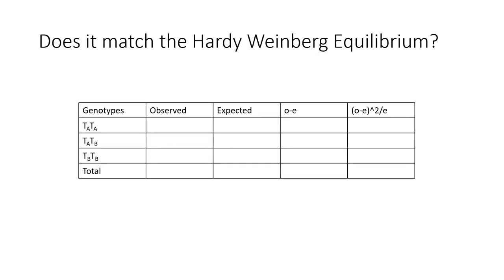Now, does it match the Hardy-Weinberg equilibrium? We can take the genotypes, and then we can use the Hardy-Weinberg equation and the expected allelic frequency times the total number of turtles, and we can find the expected number.